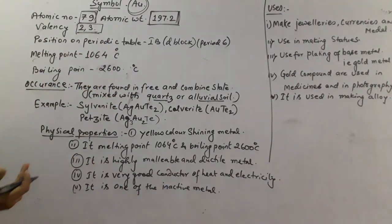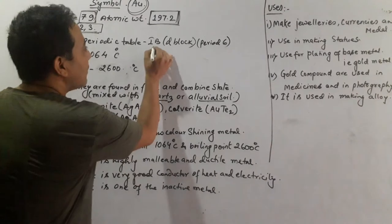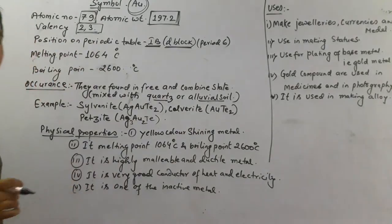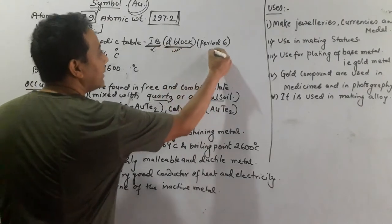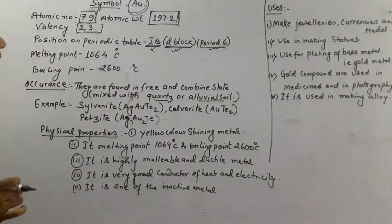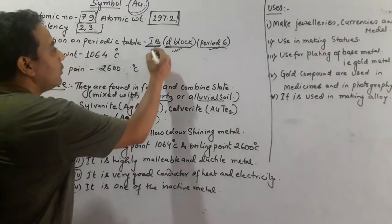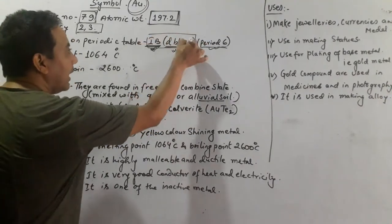If we see the position in the periodic table, it is found in 1B group, D-block elements. It is transitional elements. And if we go to the period, that is the 6th period. So in the periodic table, if we want to see gold, we have to look at group 1B, D-block, and in period 6.